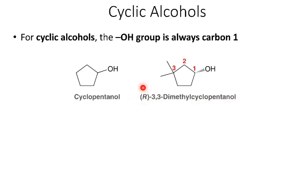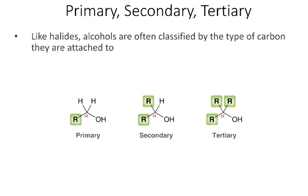When we have chiral centers, we need to give their configurations just as we did when naming alkanes. Just like alkyl halides, we often describe alcohols as primary, secondary, or tertiary. A primary alcohol means the carbon attached to the OH is attached to one other carbon. In a secondary alcohol, that alpha carbon is attached to two other carbons, and in a tertiary alcohol, the alpha carbon is attached to three other carbons.